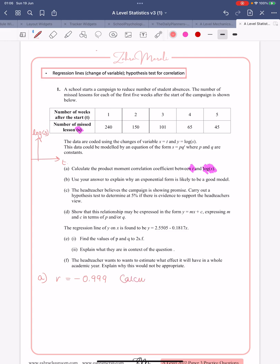You can just write 'calculation using calculator,' nobody is expecting you to do anything manual with that. It will probably only be worth a few marks. Part b, you're going to use your answer to explain why exponential form is likely to be a good model. So first of all we're going to say r is close to minus one, showing strong negative correlation. So we're now saying because that r value, remember r values are between minus one and one, minus one is perfect negative, which we're very close to, and one is perfect positive.